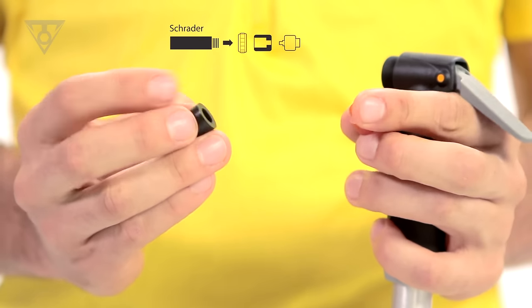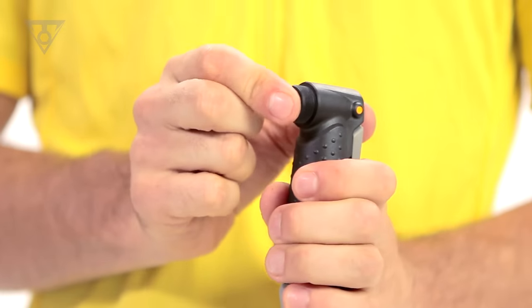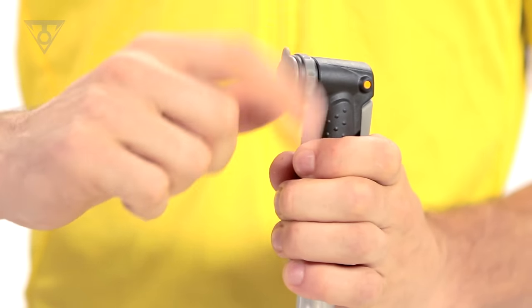Reverse the direction of both internal parts. Reinsert internal parts, lower the thumb lock lever, and screw on the pump head cap.